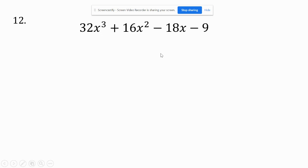So look at this one here. Is there something in 32, 16, 18, and 9? No. So let's look at the first half. What goes into both of those? It would be a 16x squared, which leaves me 2x plus 1. Because 16x squared times 2x would be 32x cubed. And 16x squared times 1 would be 16x squared.